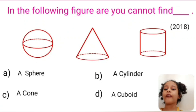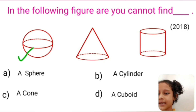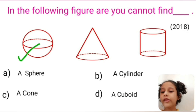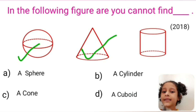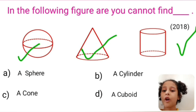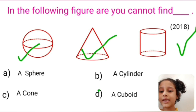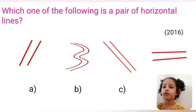In the following figure, which shape can you not find? A sphere — a sphere is present here. A cone — cone is also present here. A cylinder — cylinder is also present here. A cuboid — yes, a cuboid is not present here. So option D is our correct option.